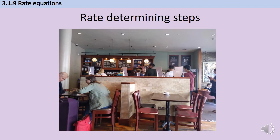You can picture this like going into a coffee shop to order a drink. There might be someone ready and waiting to take your order, but it doesn't matter how fast he takes your order because the person actually making the coffee can't go that quickly. You've got a bottleneck — things are slowed down by the slowest person, and that's like the rate determining step.